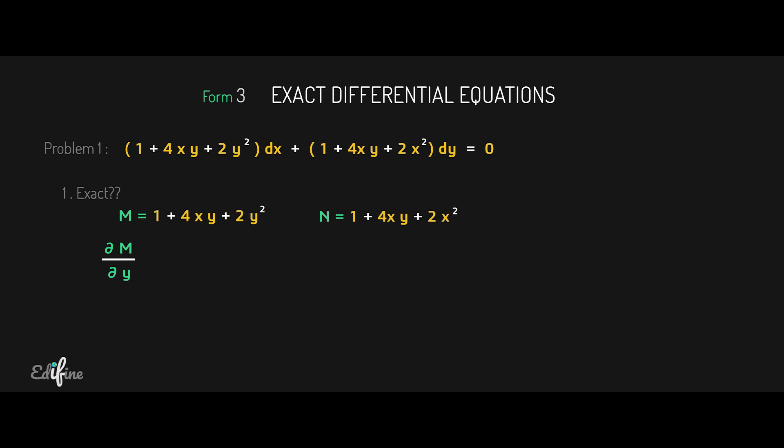For that, we find ∂M/∂y = 4x + 4y, and ∂N/∂x = 4y + 4x, since we are differentiating N partially with respect to x keeping y constant. The derivative of the first term is 0, the derivative of the second term 4xy gives 4y, and the derivative of the third term 2x² gives 4x.